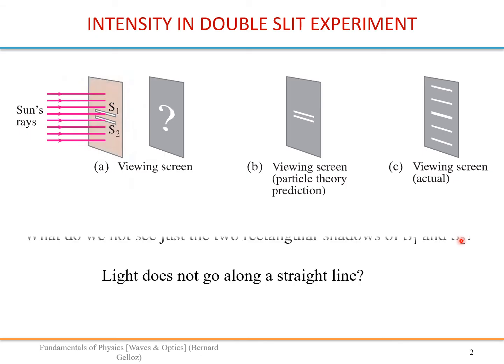This is a result of the wave nature of light. We cannot say that light is just going in straight lines, because the slit dimensions are close to the wavelength of light. In such a case, we have diffraction phenomena showing up.